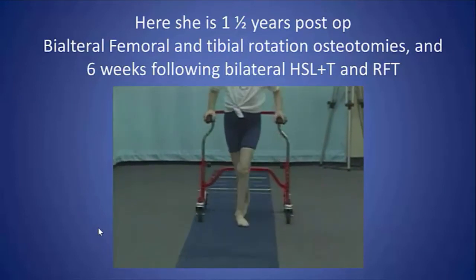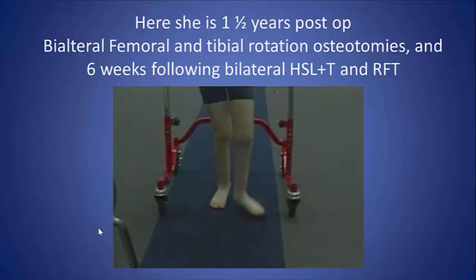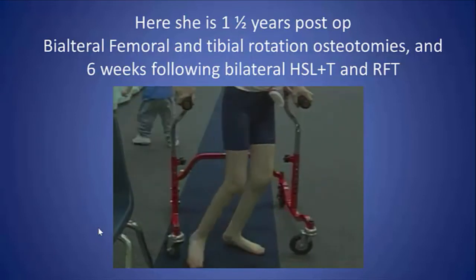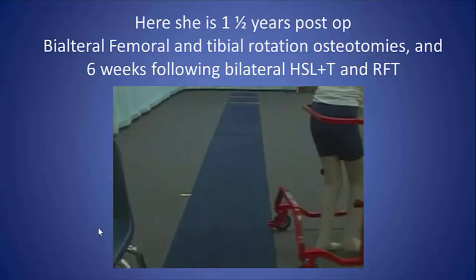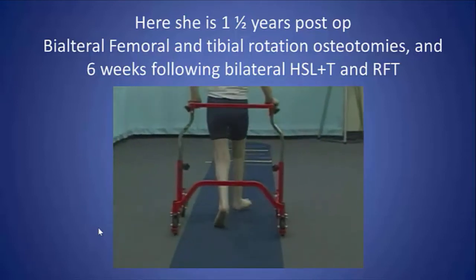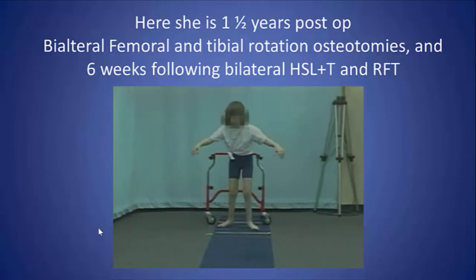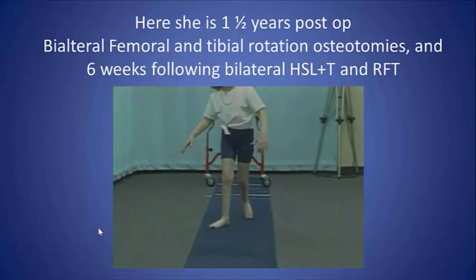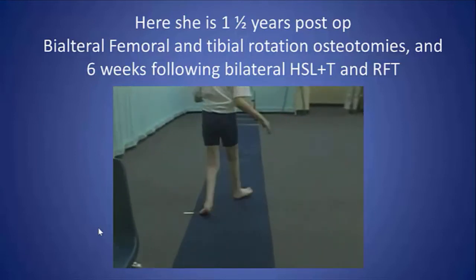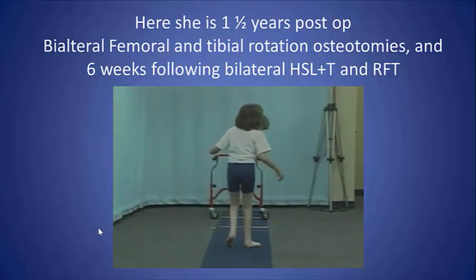She underwent bilateral femoral and tibial rotation osteotomies. She did have some knee flexion at the time, but I chose to stage her muscle releases, because sometimes when you do the bony rotational correction you also see correction of some sagittal plane deformities. However, she persisted in knee flexion, so a year and a half later, when she had her hardware removed, she also underwent bilateral hamstring lengthening plus transfer and rectus femoris transfer.